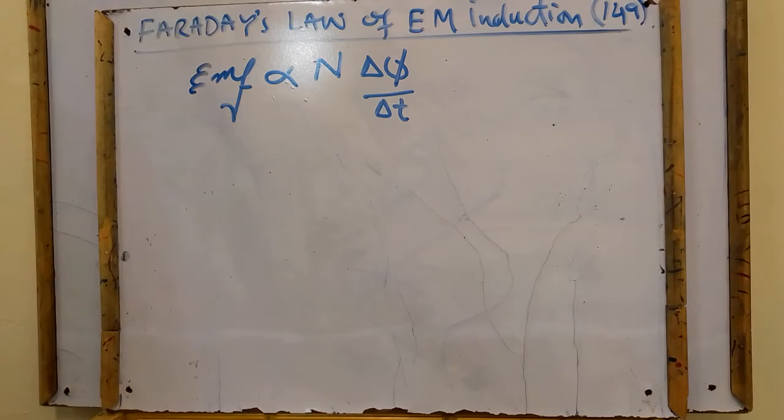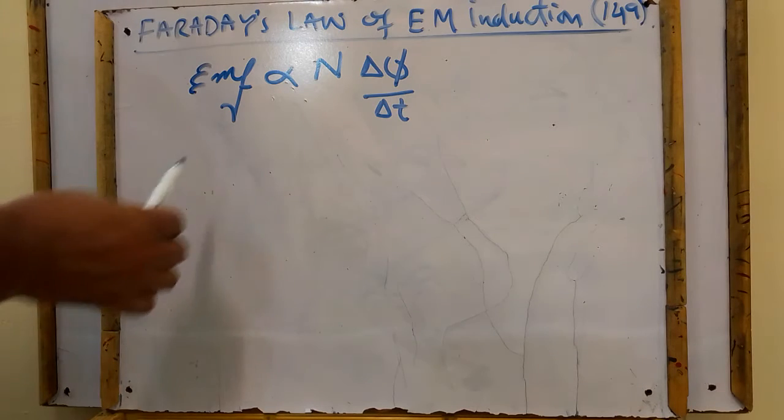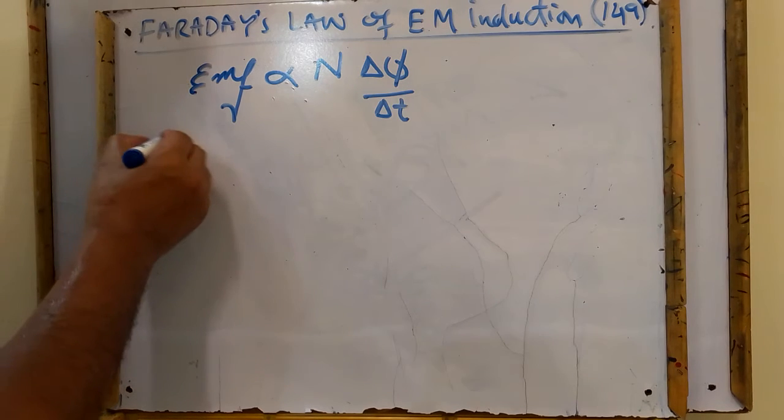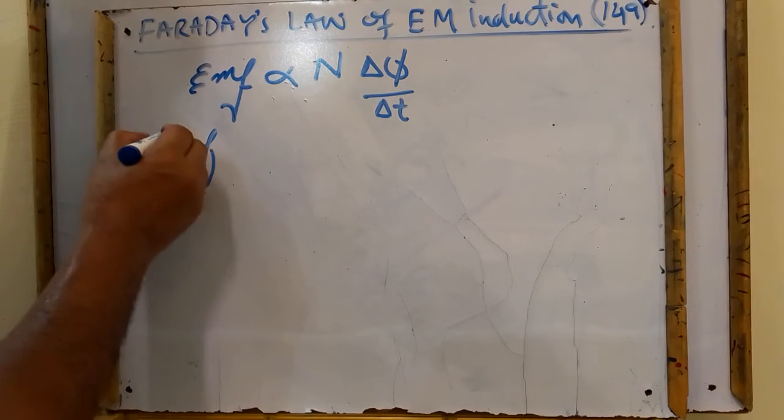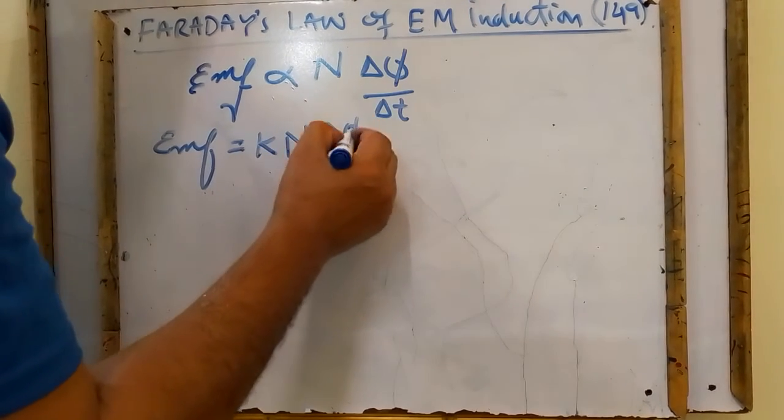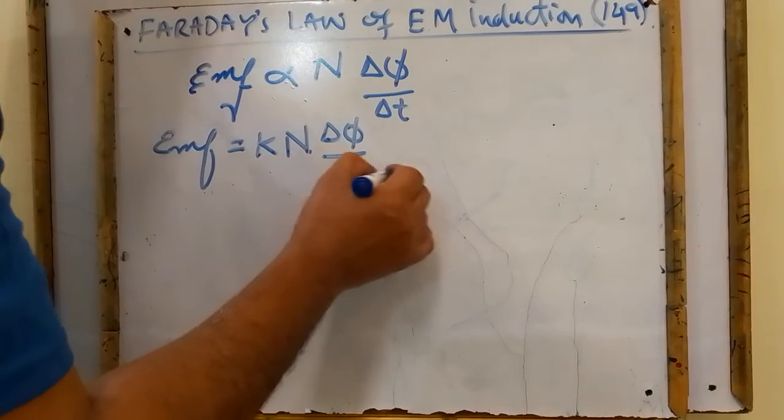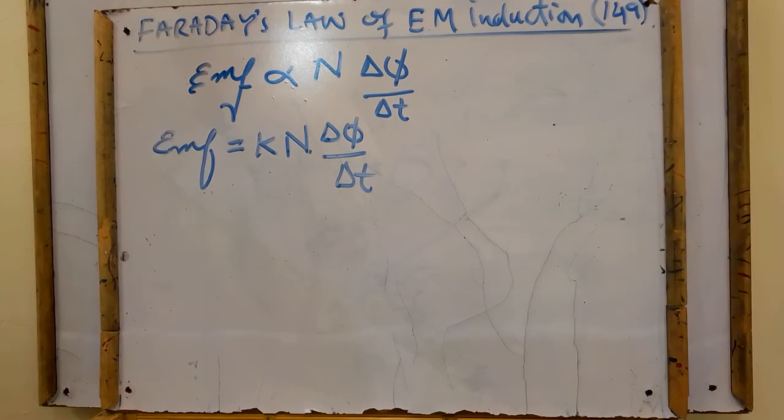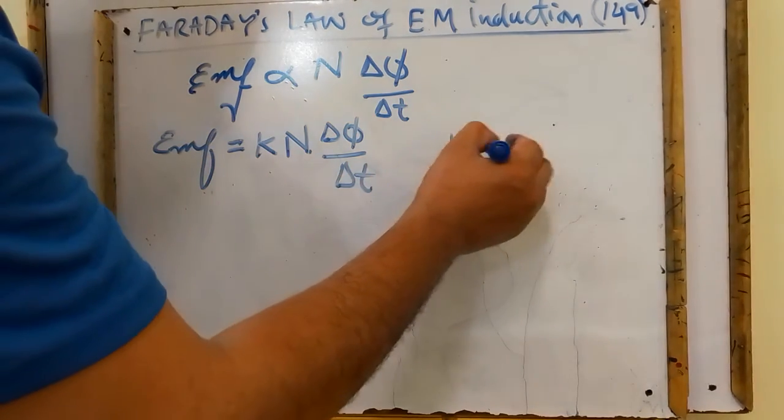As we are unable to perform further calculation based on this relation, we will change this relation into an equation by introducing a constant k in the equation. Now this becomes an equation where k is the constant of proportionality and its value comes out to be 1.